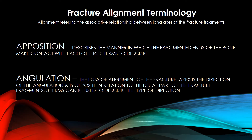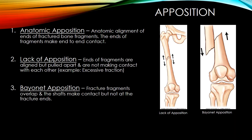Fracture alignment terminology: alignment refers to the associative relationship between the long axis of the fracture fragments. Apposition describes the manner in which the fragmented ends of the bone make contact with each other. Three terms describe this. Angulation is the loss of alignment of the fracture. The apex is the direction of the angulation and is opposite in relation to the distal part of the fracture fragments. Three terms can be used to describe this direction.